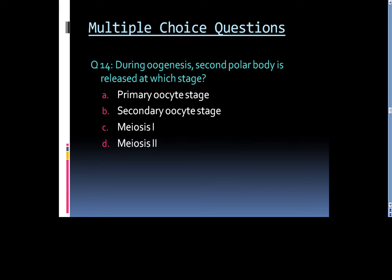Question 14: During oogenesis, the second polar body is released at which stage? Option A. Primary oocyte stage, Option B. Secondary oocyte stage, Option C. Meiosis 1, or Option D. Meiosis 2.